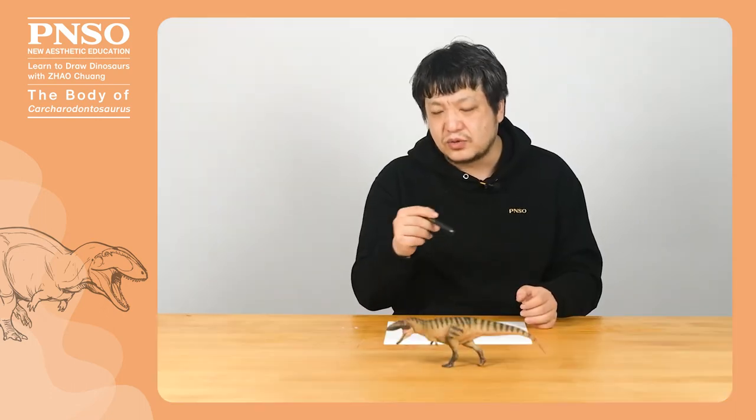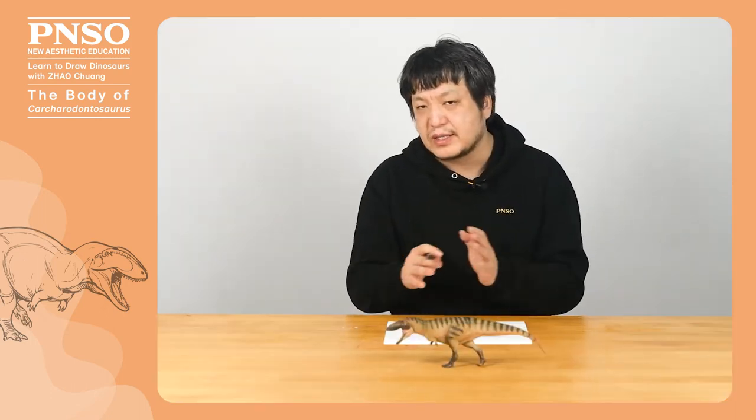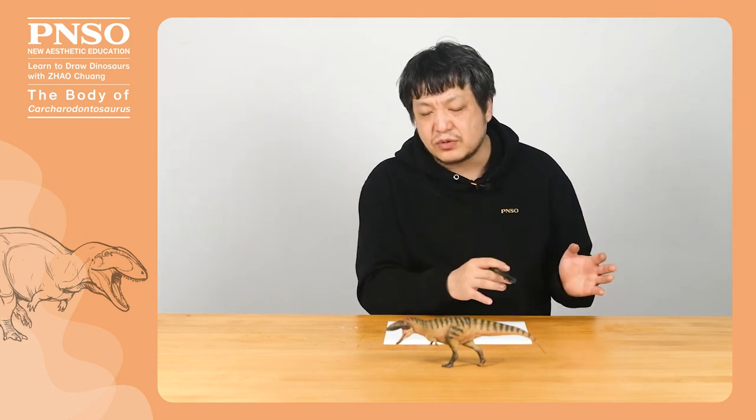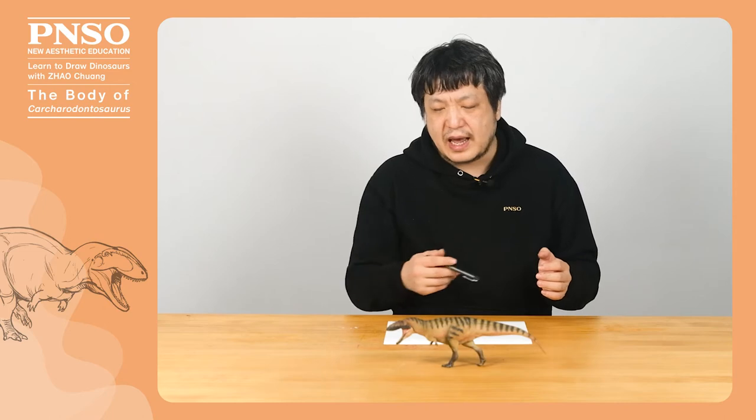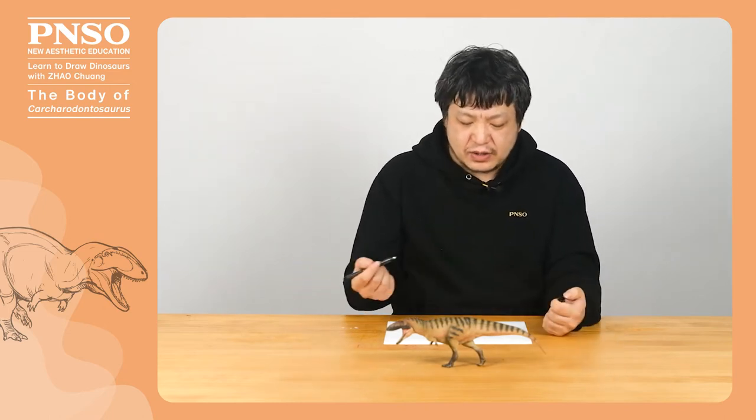So when drawing, we first need to determine the proportions and positions of its head, arms and legs in the picture so that we won't draw it out of paper. Now, let's draw the body of Carcharodontosaurus.